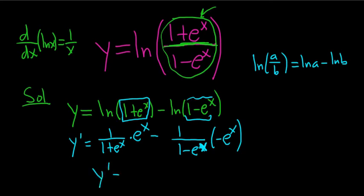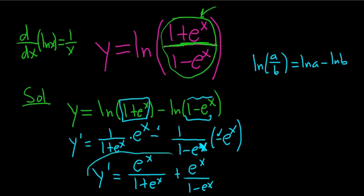Cleaning this up, we have y prime equals e to the x over 1 plus e to the x. And then minus and minus is plus, so plus e to the x over 1 minus e to the x. And that is the final answer. Hope that made sense.